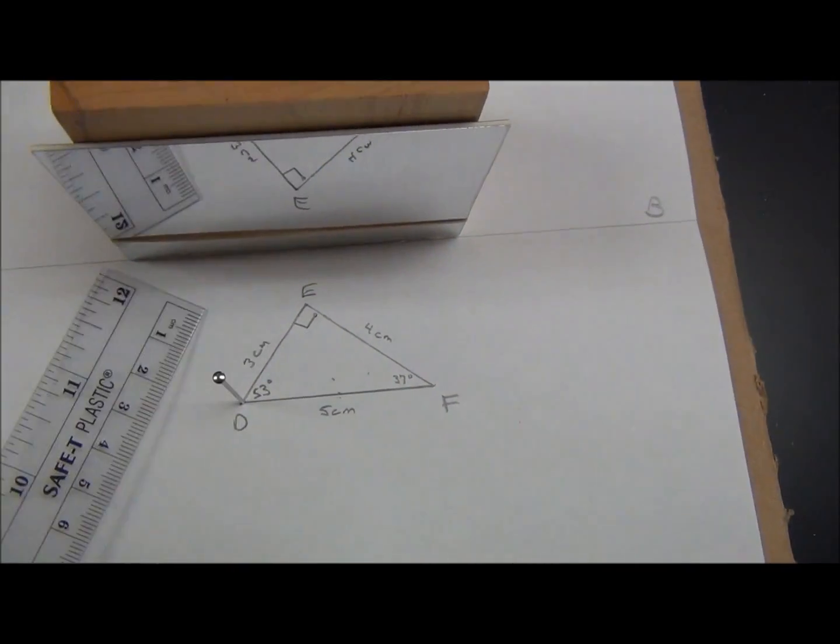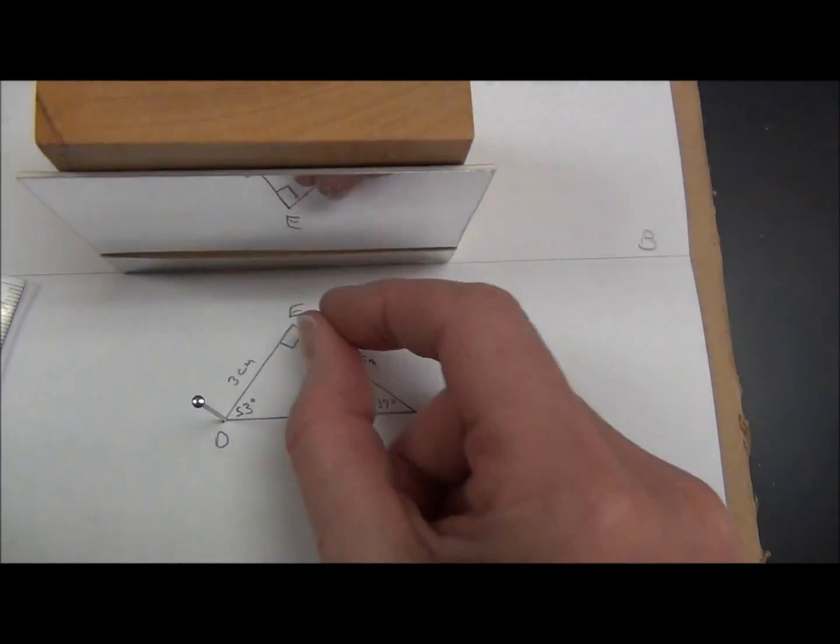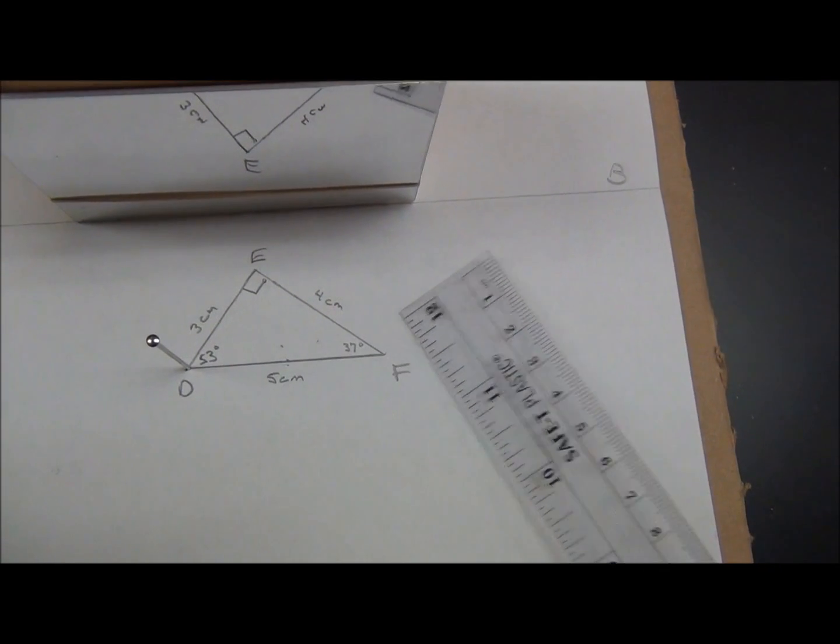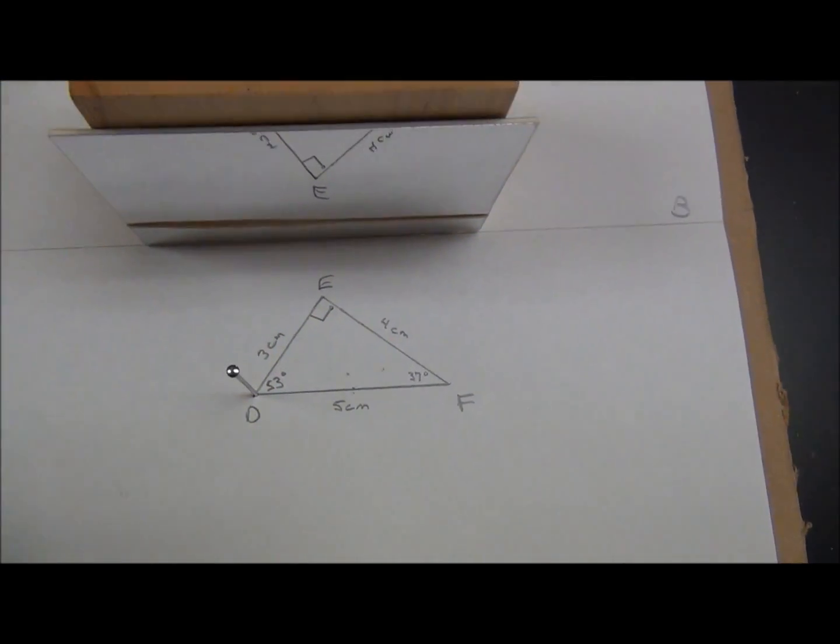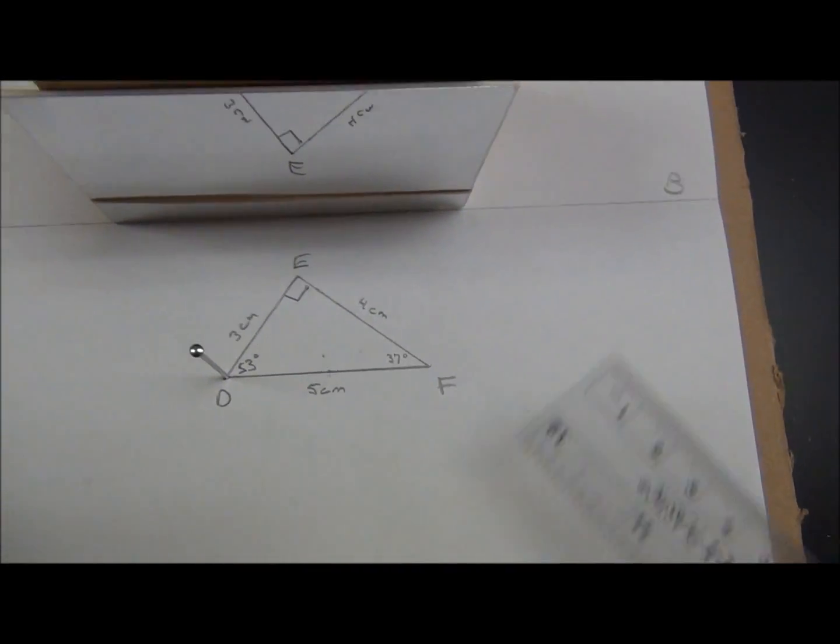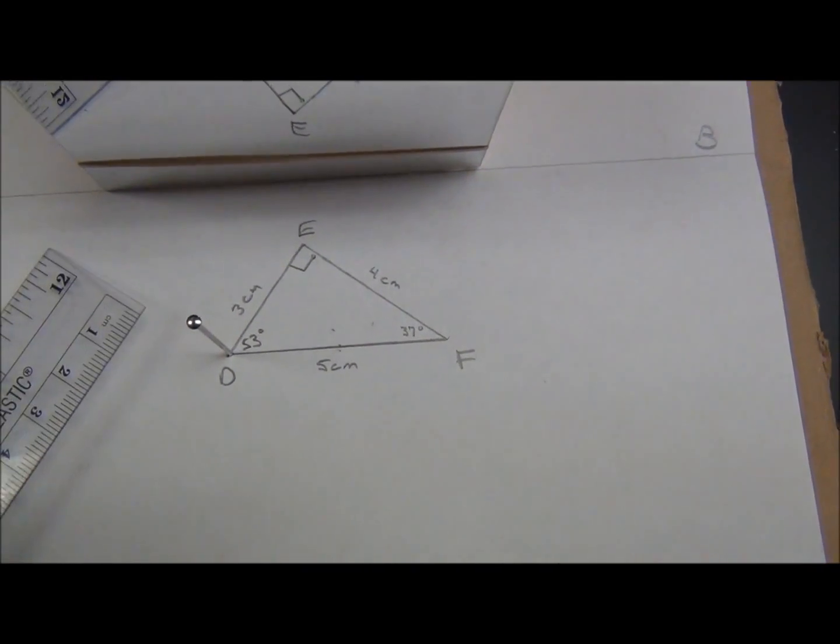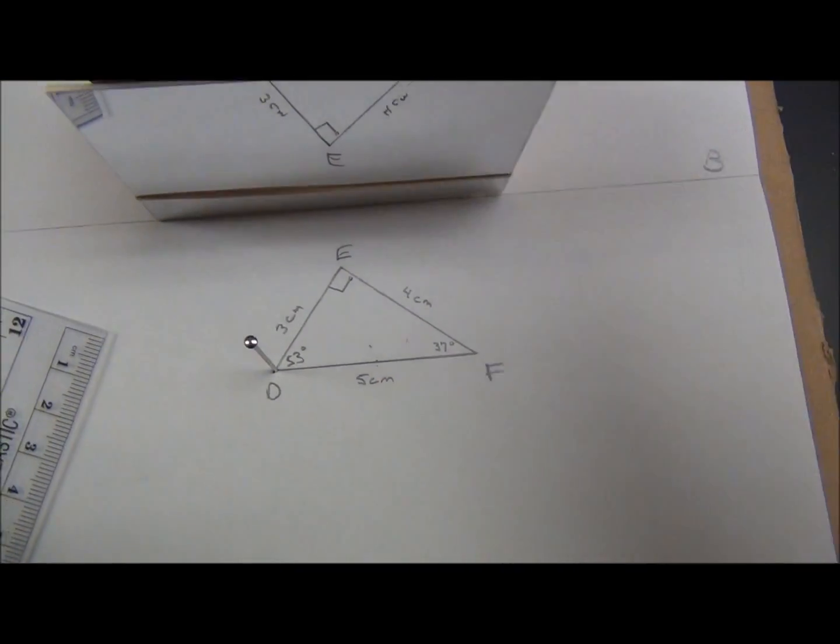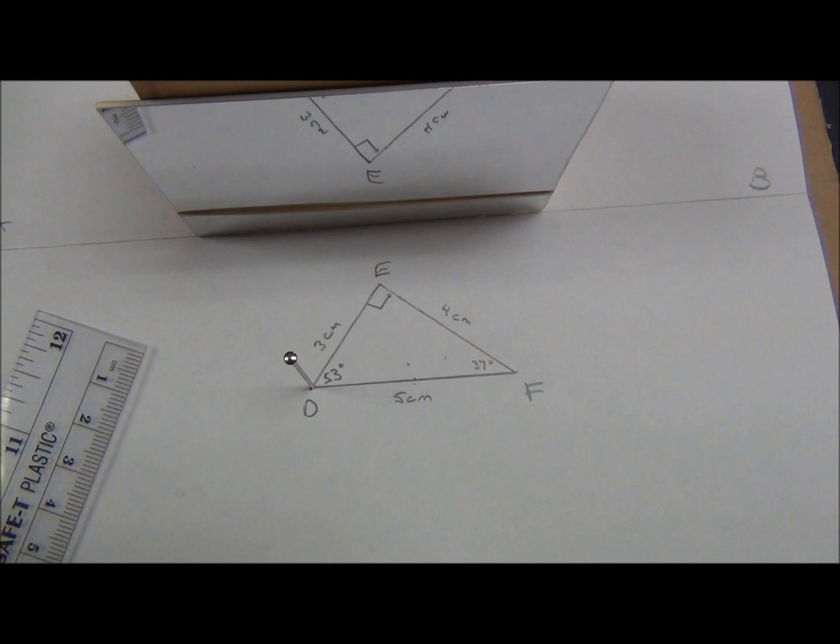sight to the right, sight to the left, move the pin to E, sight to the right, sight to the left, move the pin to F, sight to the right, sight to the left, remove the mirror, and join the three lines.